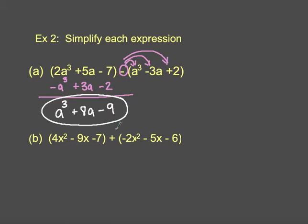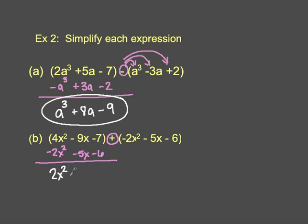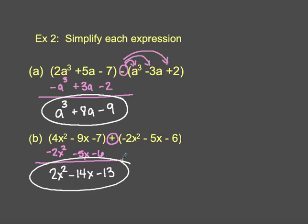For my second example, it is simply addition, so I don't have to worry about changing any signs — I just need to collect like terms. I have 4x squared and negative 2x squared, negative 9x and negative 5x, and negative 7 and negative 6. Collecting: 4x squared minus 2x squared gives me 2x squared, negative 9x minus 5x is negative 14x, and negative 7 minus 6 is negative 13. So I end up with 2x squared minus 14x minus 13.